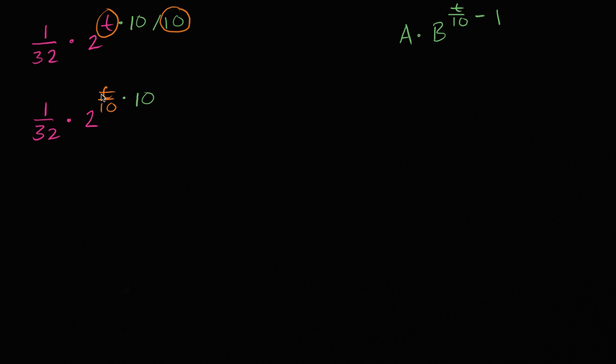So how do I deal with this? Well, one thing that I could do, let me actually just write this the other way around. Let me write it as 10 times t over 10. So hopefully what I just did here isn't a huge stretch. I just literally multiplied and divided by 10.